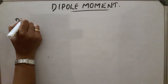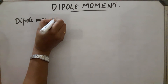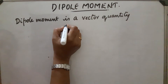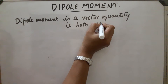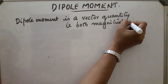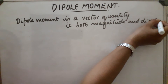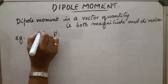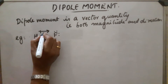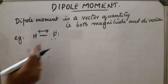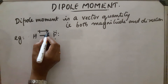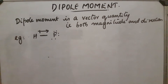Dipole moment is a vector quantity, meaning it has both magnitude and direction. For example, we know fluorine is more electronegative, so this can be represented with an arrow indicating that the electron pair shifts towards the fluorine atom. This arrow represents the direction of shift of the electron pair towards the more electronegative fluorine atom.